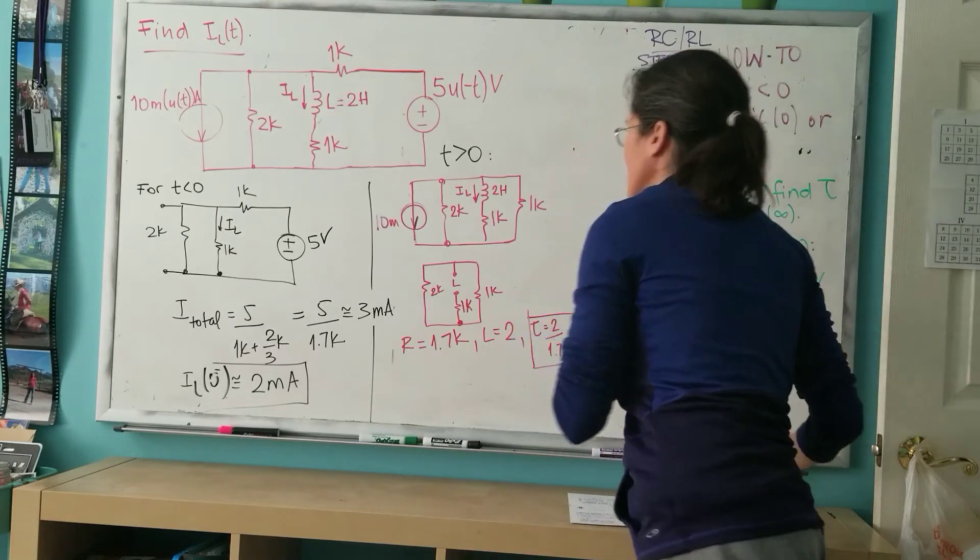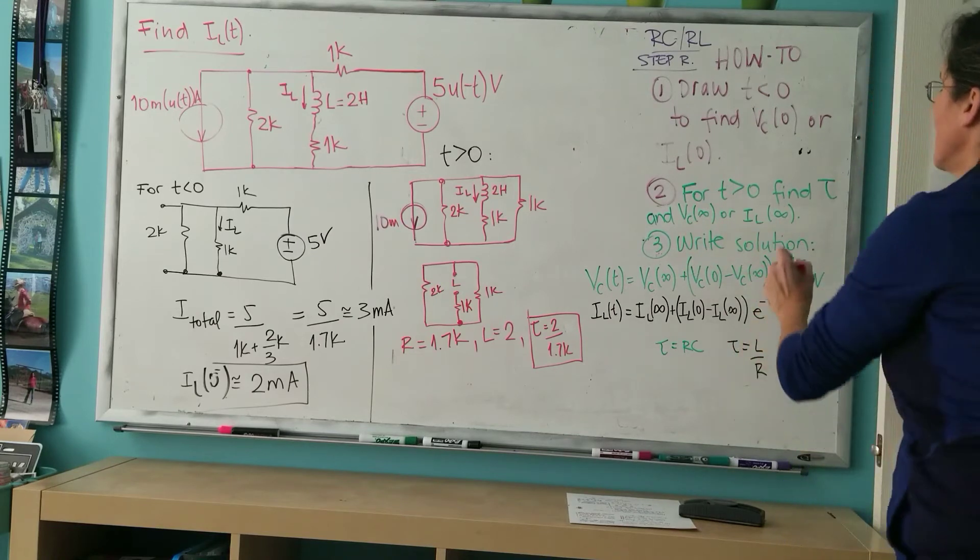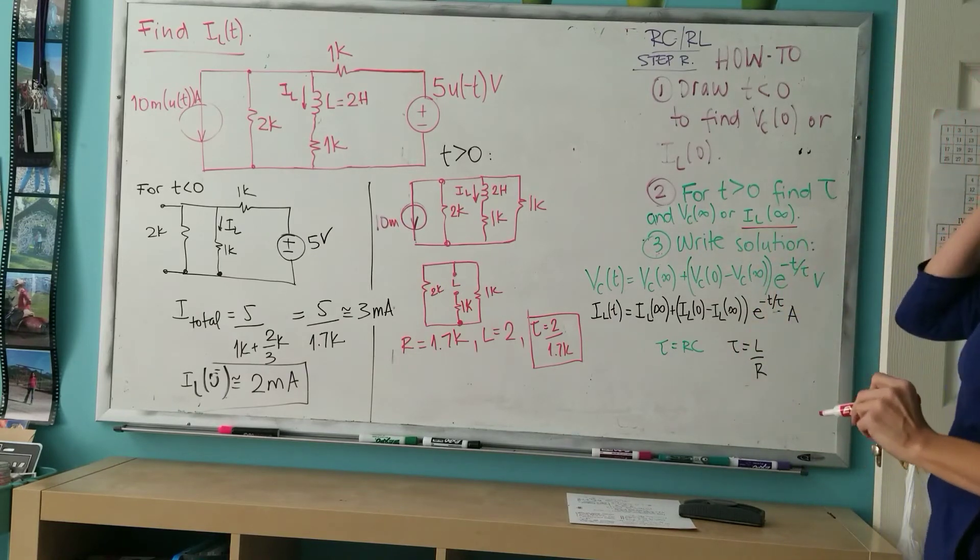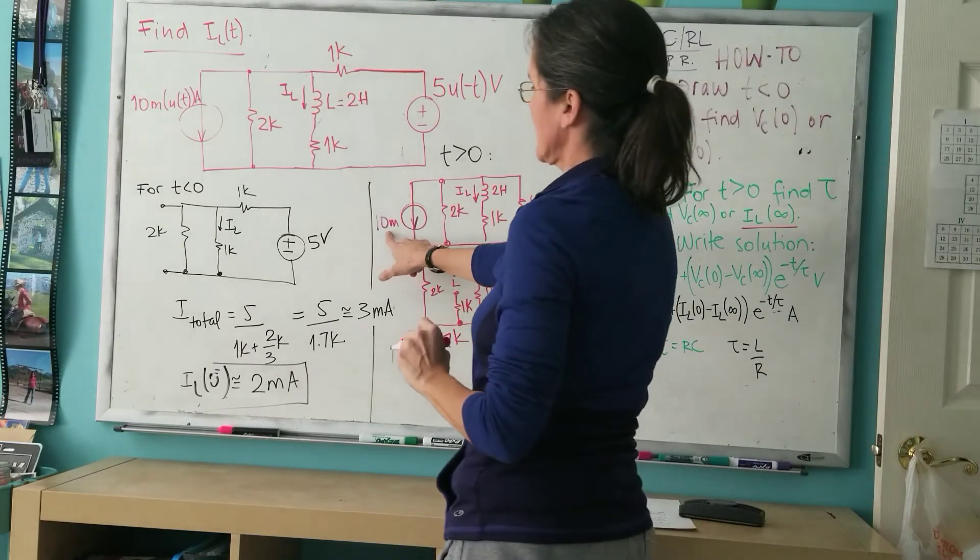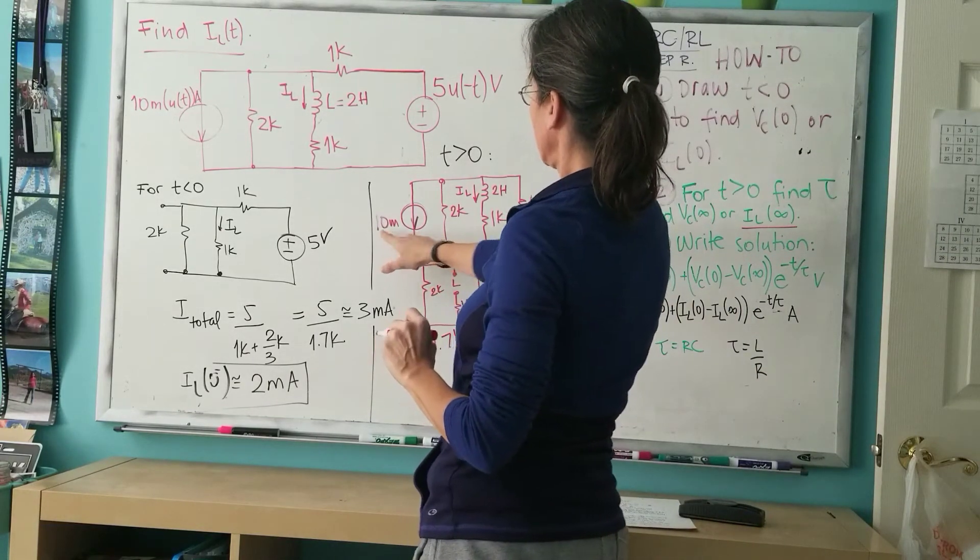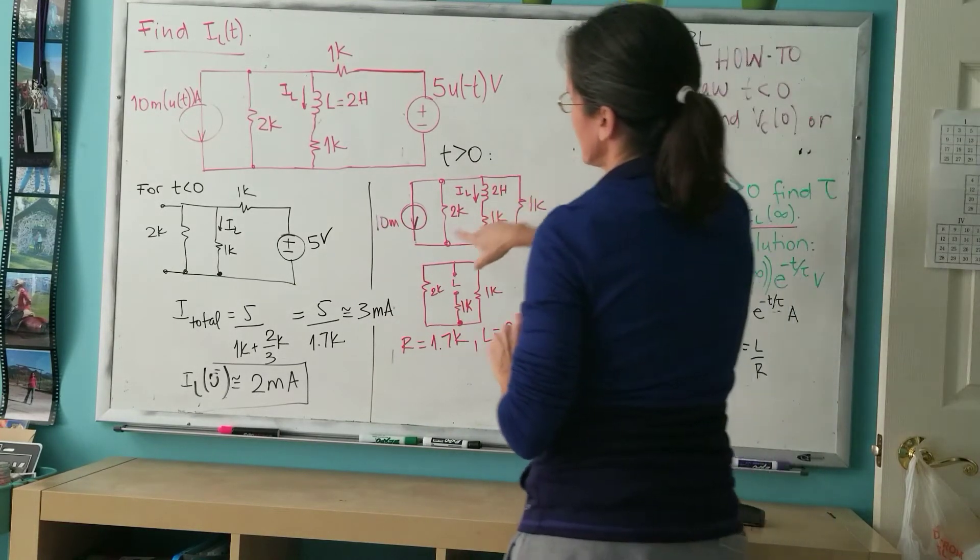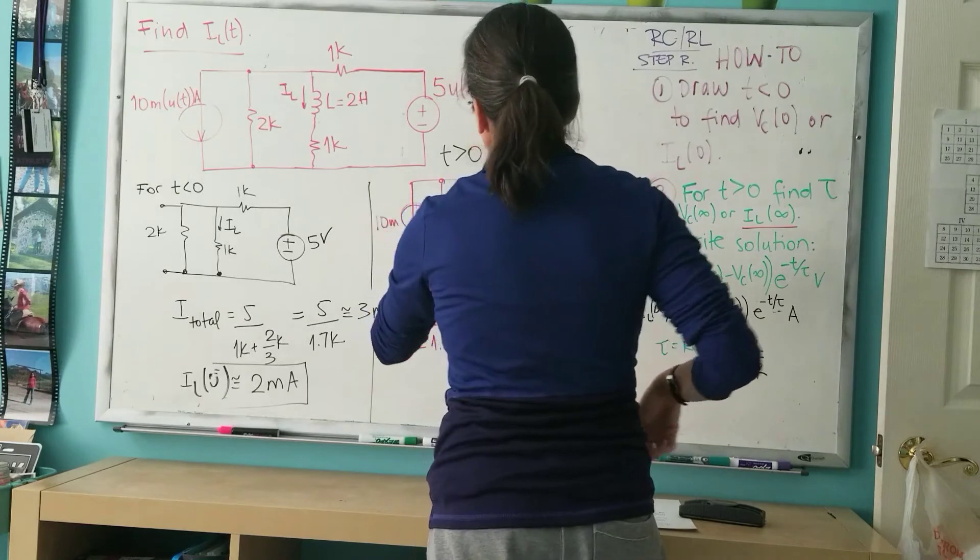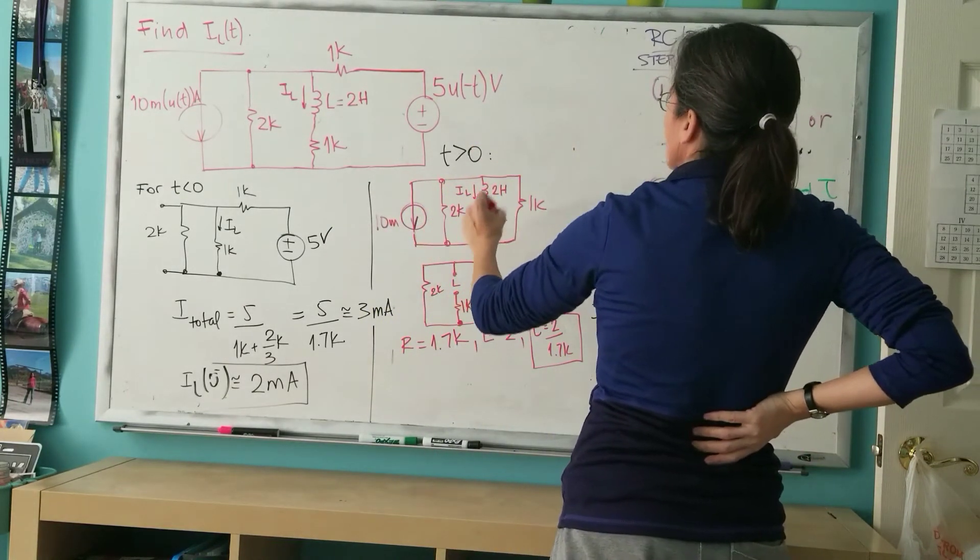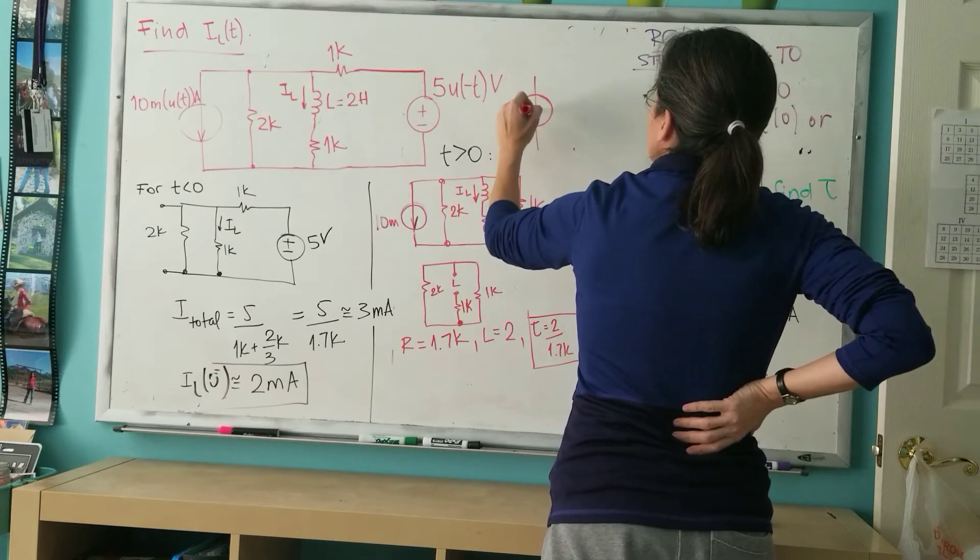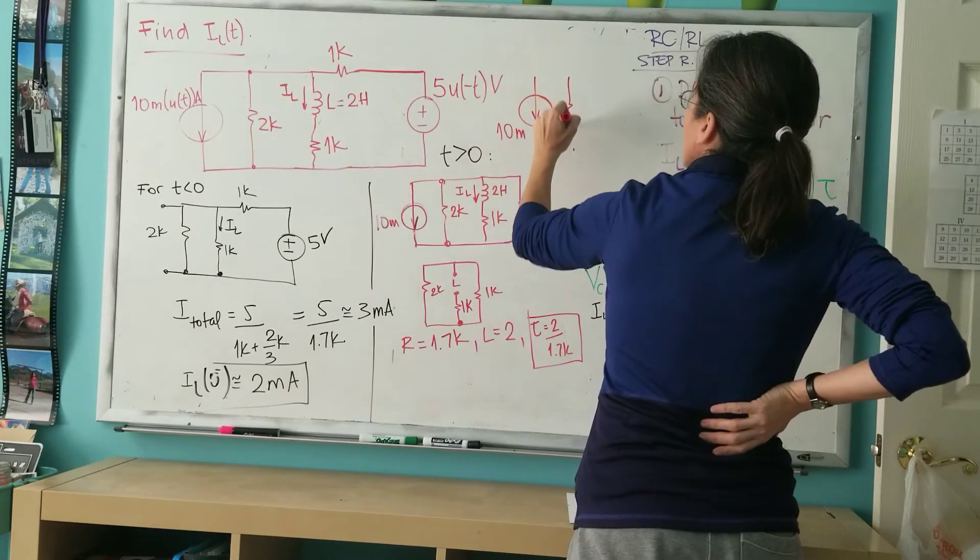The point now is to find the IL of infinity, which is going to be a negative number. And now these three are in parallel. So it's 10m, 1 and 1k, 2k. It's 10m and now I have 2k and this guy is 0.5k.